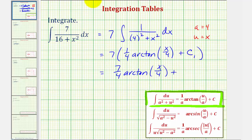for seven times c sub one, which is just another constant, we'll let c be equal to seven times c sub one. So we can just write plus c here.